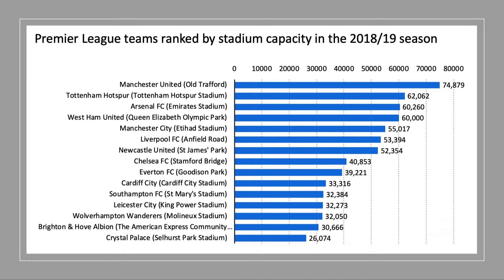A good example of fixed supply is the capacity of stadiums, concert halls, theatres, and cinemas. Here are the Premier League teams ranked for the 2018-19 season, including the new Tottenham Hotspur Stadium, which is the biggest stadium in London outside of Wembley. The capacity of the stadium essentially means there's a fixed supply of tickets for each game.